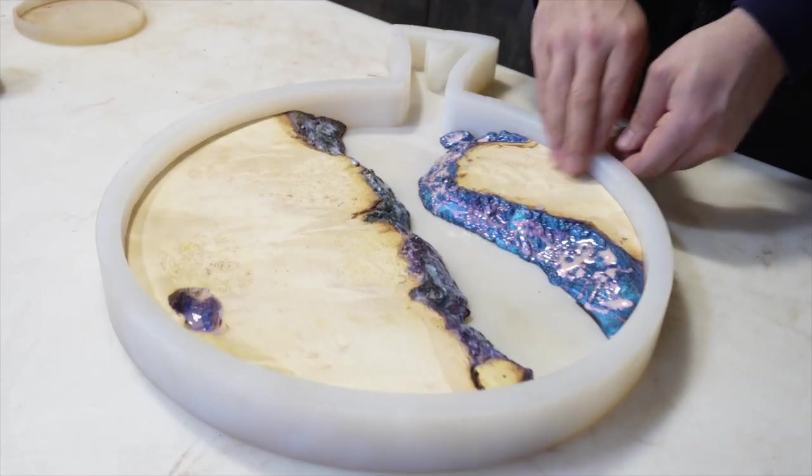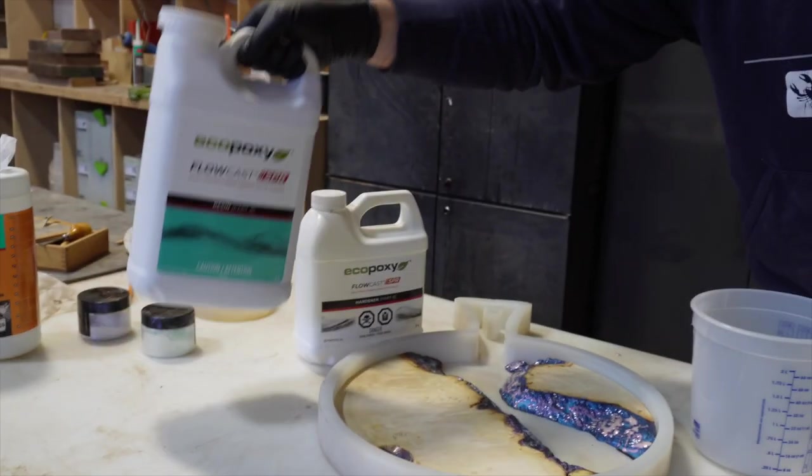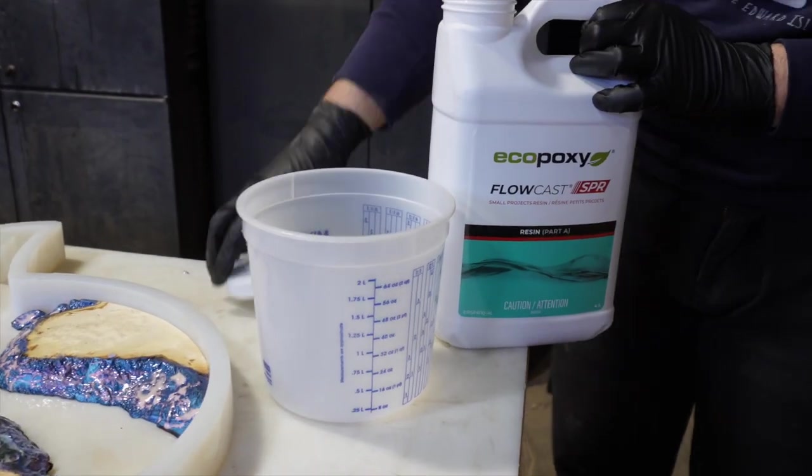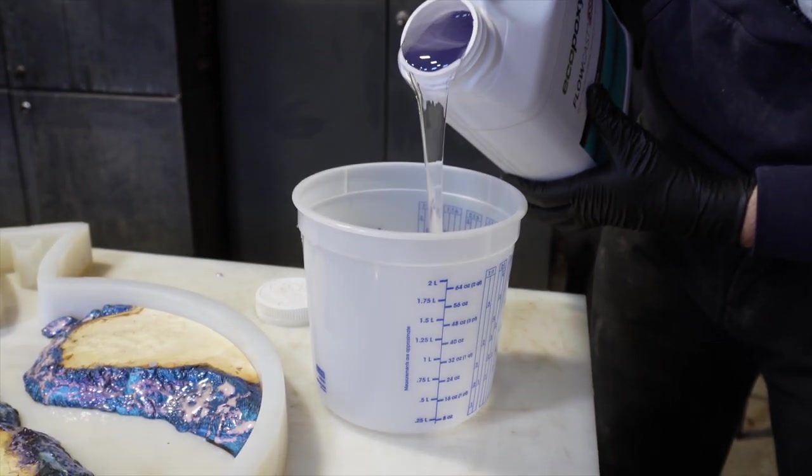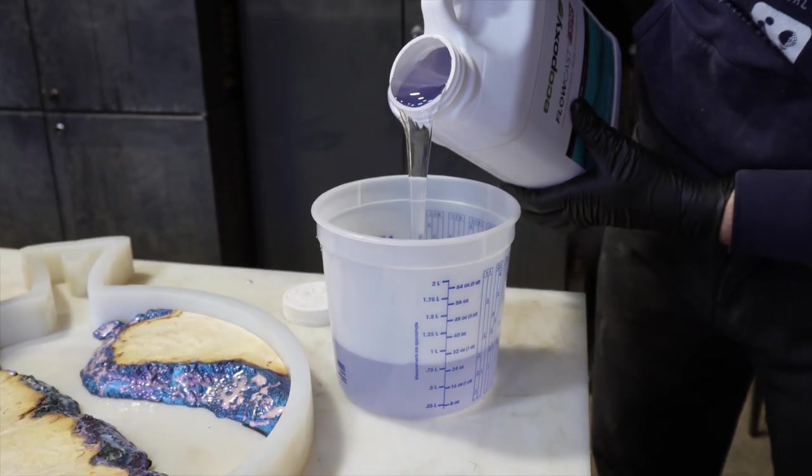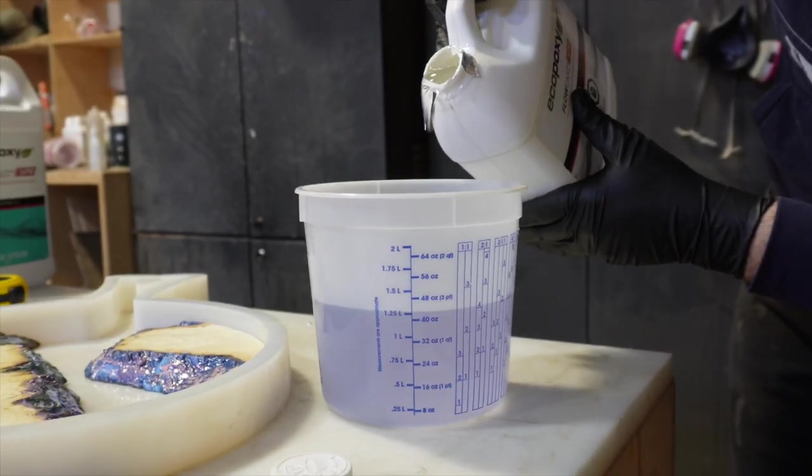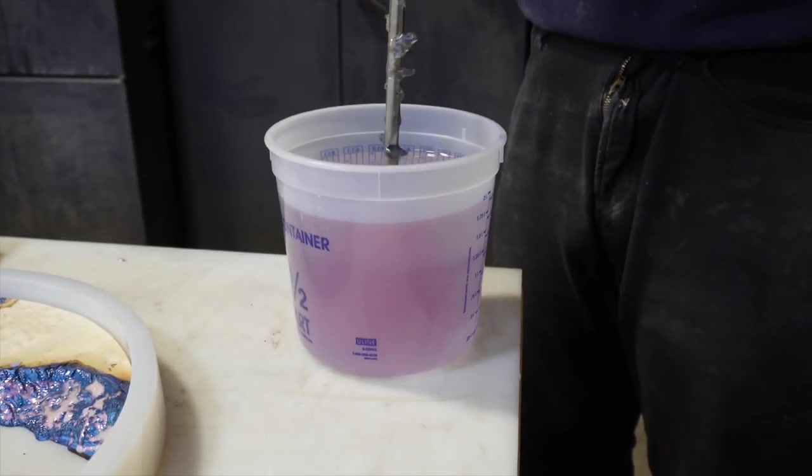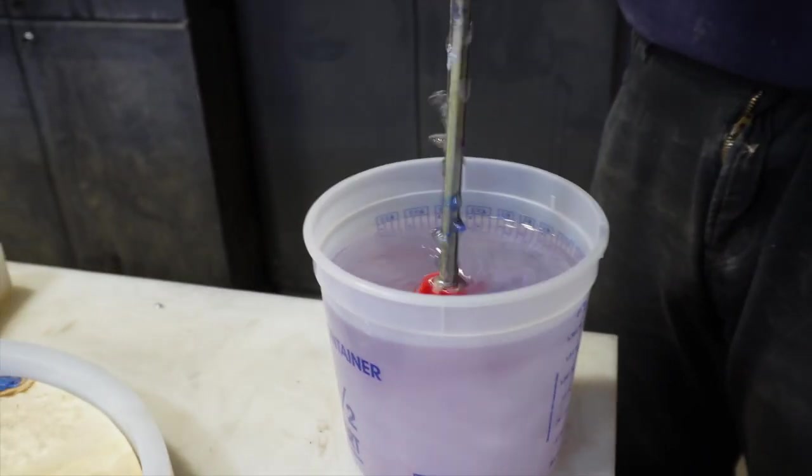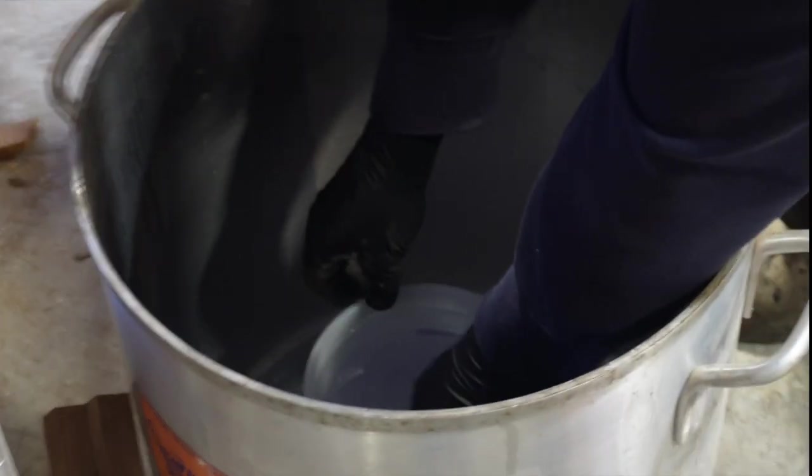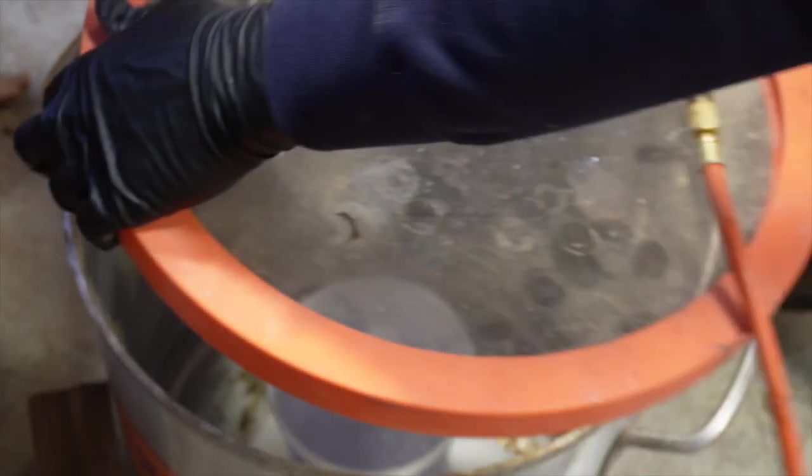After that epoxy edge has cured, we grab our Ecopoxy Flowcast SPR and we'll mix up a batch of this. The reason we're using this epoxy is because it works really well for these one-inch thick pours. Cures a little faster than the normal Flowcast, which is important because we want this to cure overnight. We use a degassing chamber because we want this to be clear when it's cured, and this degassing chamber will remove all those micro bubbles so that it cures nice and clear.